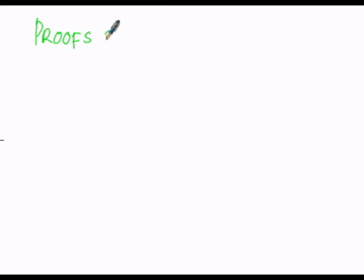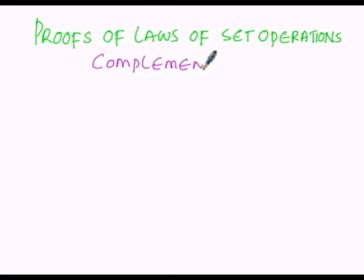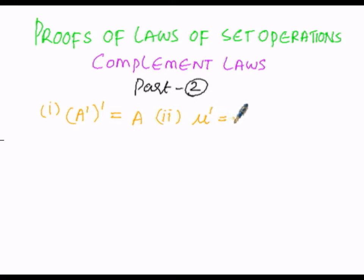Proofs of laws of set operations. We are going to prove some laws of set operations — specifically the complement laws. Under the complement laws we are going to prove part 2. The conditions are: first, (A')' = A; second, μ' = φ (complement of the universal set equals the empty set); and third, φ' = μ. We are going to prove these 3 conditions.